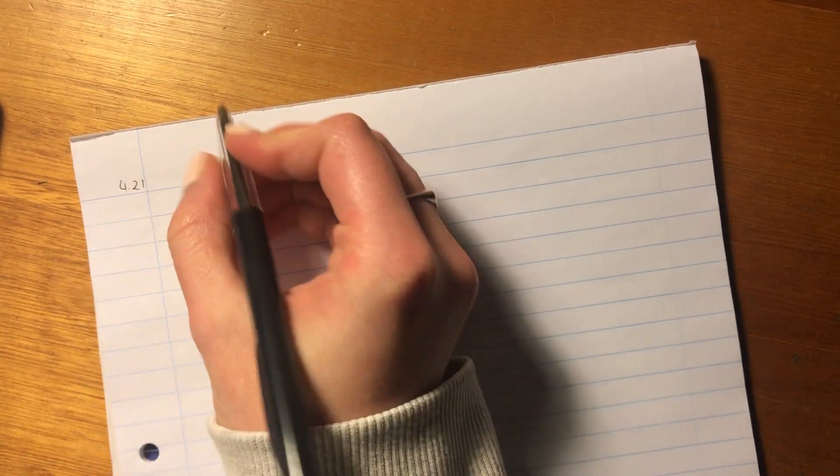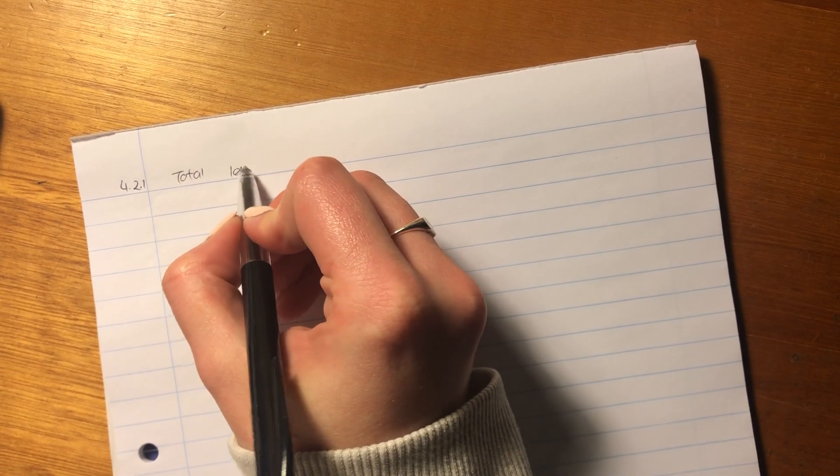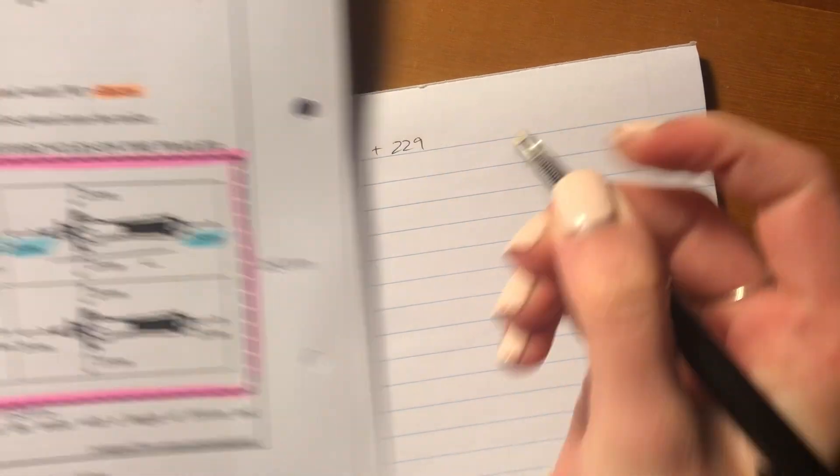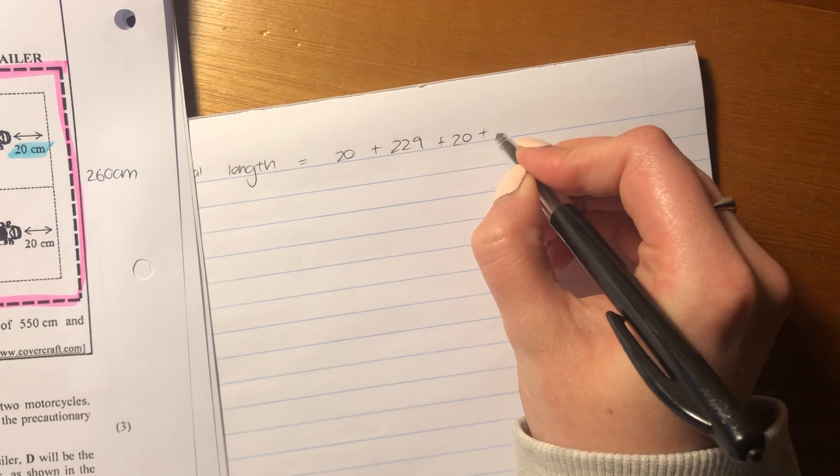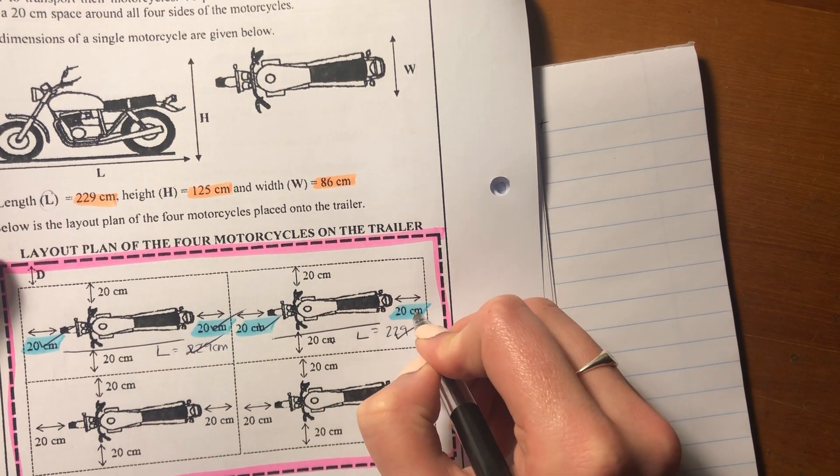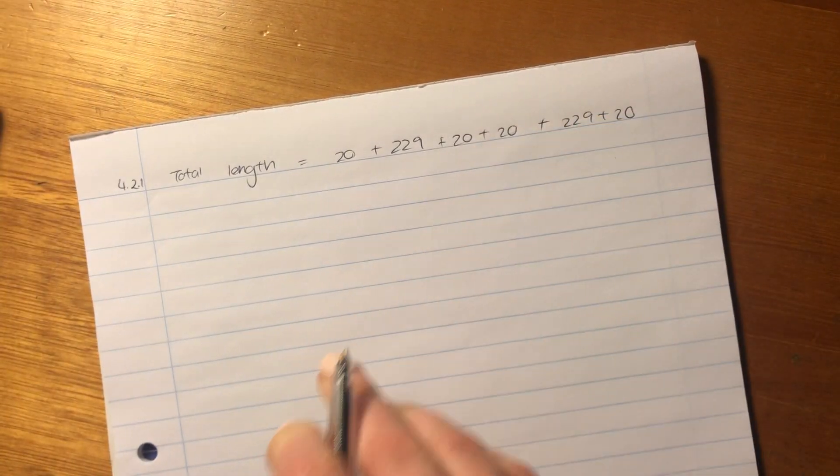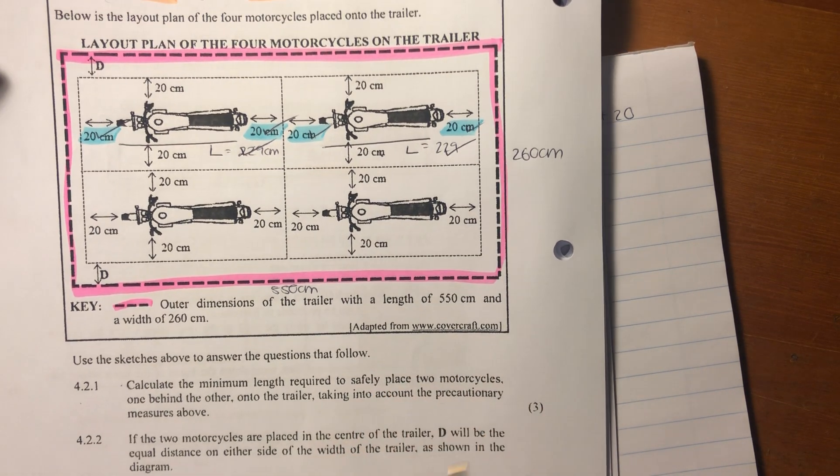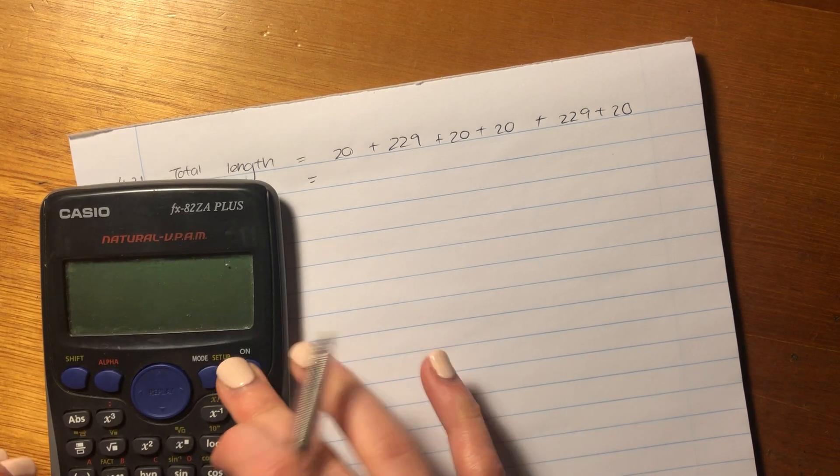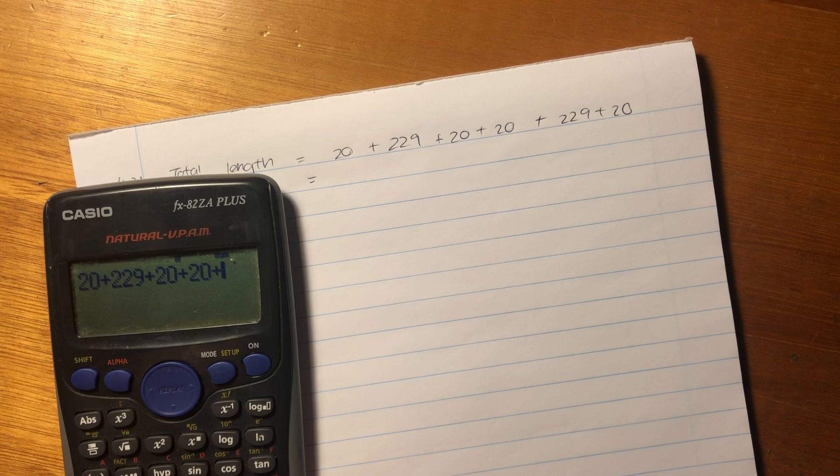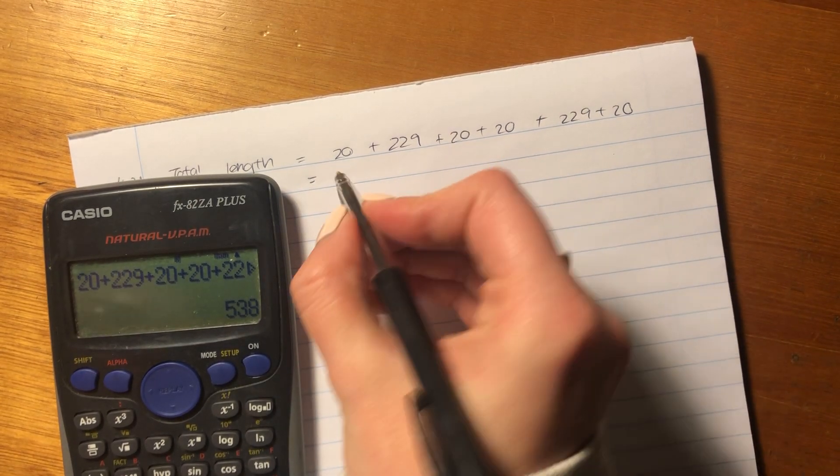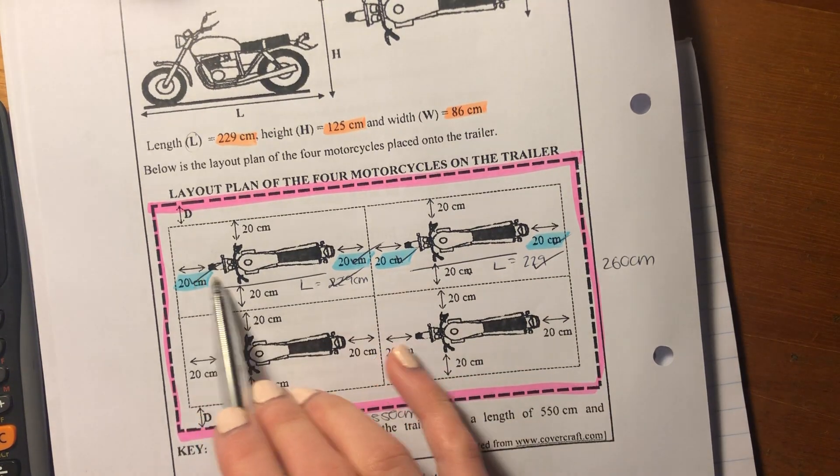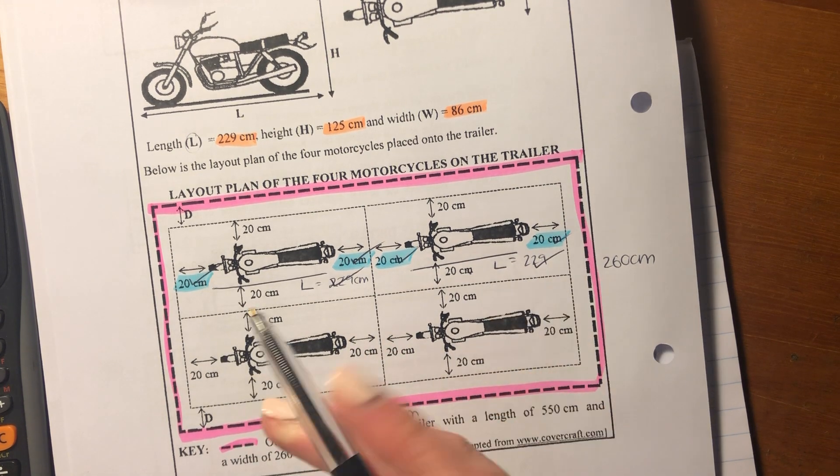It's 4.2.1, right? So the total length that we're looking for here is going to equal 20 centimeters. So that 20 centimeters plus this length, 229 plus 20 centimeters plus 20 centimeters, plus 229, plus 20 centimeters. That is the length required to safely place two motorcycles, one behind the other onto the trailer. So that's how much space we actually need. So let's now see what this all equals. Put this into your calculator. 20 plus 229, plus 20, plus 20, plus 229, plus 20. So I'm getting 538 centimeters. That is the length that we need to put two motorcycles, two motorcycles behind each other, taking into consideration the precautionary space to make sure they don't get damaged.